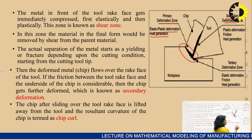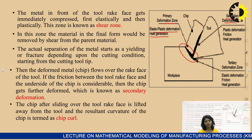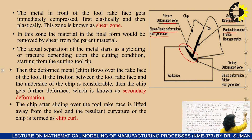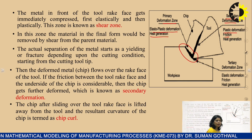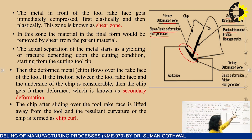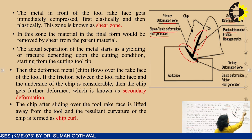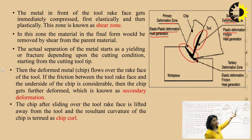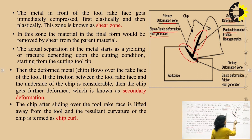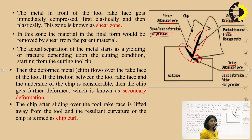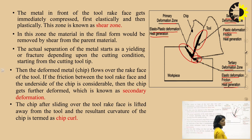Then we have the secondary deformation zone, where only plastic deformation takes place — no elastic deformation. This occurs at the interface of the tool and the underside of the chip as the chip flows over the rake face. If friction between the tool and chip is high, the material gets further deformed here. Then we have the tertiary deformation zone, between the tool and the workpiece, where only elastic deformation takes place and heat is generated due to friction.